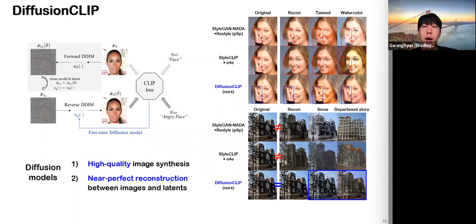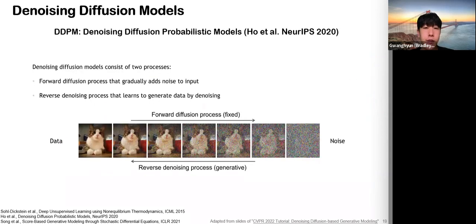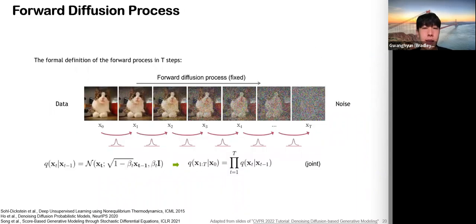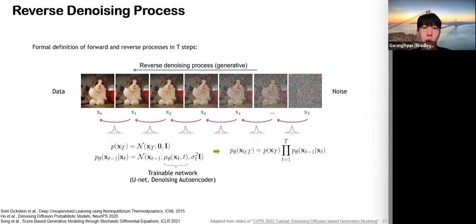To overcome these issues, here we propose Diffusion Clip, a CLIP-guided robust image manipulation method using diffusion models, which shows high-quality image synthesis as well as near-perfect reconstruction performance between latents and images. Diffusion models consist of a forward process and a reverse diffusion process. The forward process is a fixed Markov chain with Gaussian transition, where noise is gradually added to the data with a predefined noise schedule. The reverse process is also a Markov chain where the sample is iteratively denoised, parameterized by a neural network.